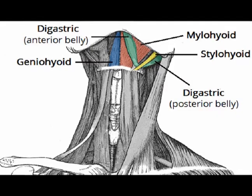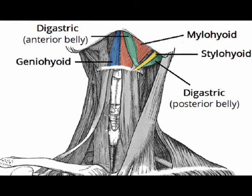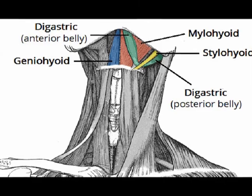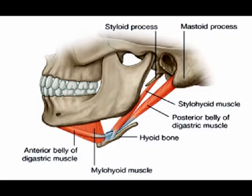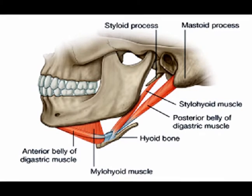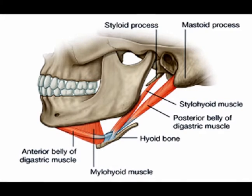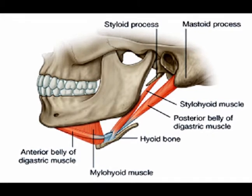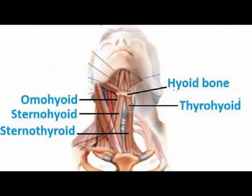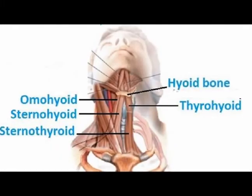It functions as an anchor for the suprahyoid muscles and the infrahyoid muscles. The suprahyoid muscles are the digastric, the stylohyoid, the mylohyoid, and the geniohyoid.